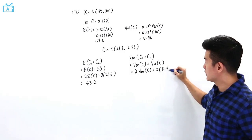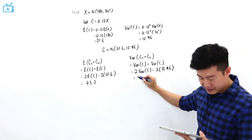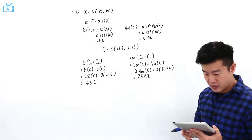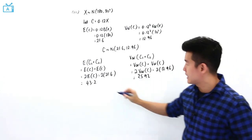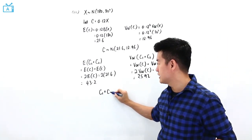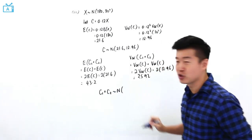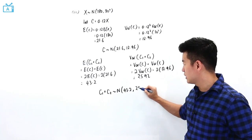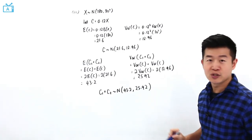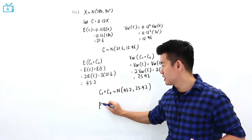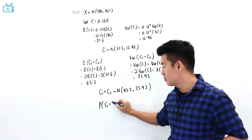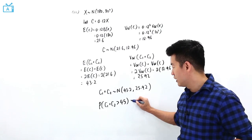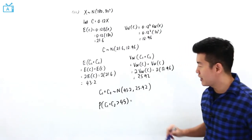The variance of C1 plus C2 is the variance of C1 plus the variance of C2, which is two times the variance of C. That is two times 12.96, equal to 25.92. This means that C1 plus C2 follows a normal distribution with mean 43.2 and variance 25.92.